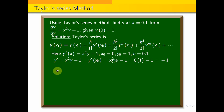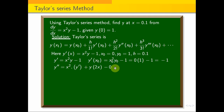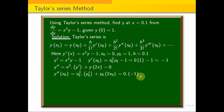Now for y double dash of x, differentiating gives x squared into y'(x0) plus y0 into 2x0. Substituting x0 equals 0: we get 0 into y'(x0) plus y0 into 2 times 0, which equals 0. So y double dash of x0 is equal to 0.